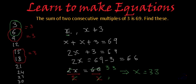So what is x? x is smaller number which is equal to 33 and what is the bigger number? Bigger number is x plus 3. So x plus 3 will be 33 plus 3 which is 36.